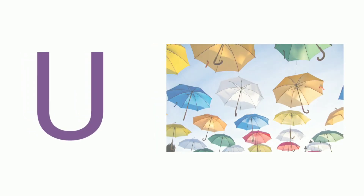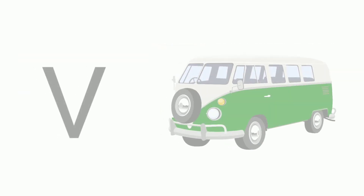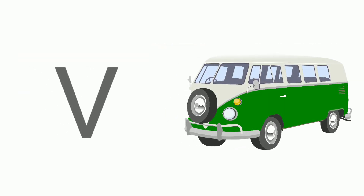U. U for umbrella. Umbrella means chatta. V. V for van. Van means gadi.